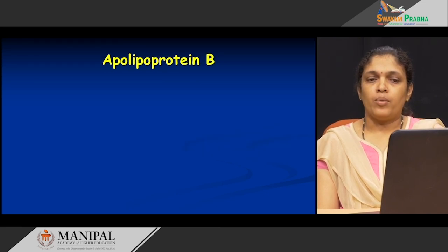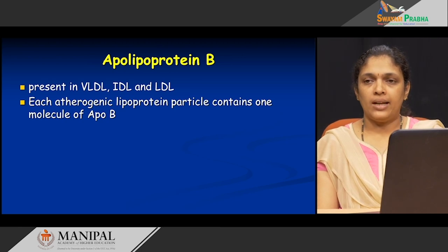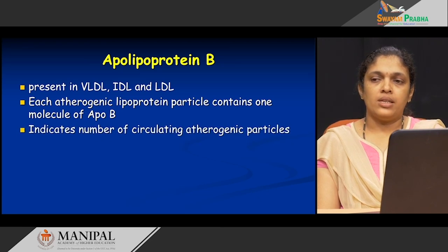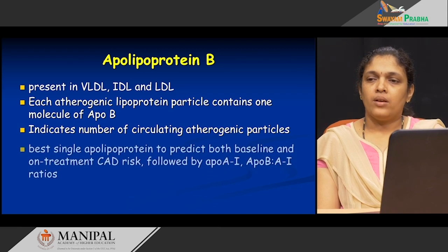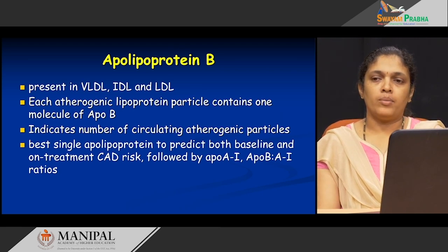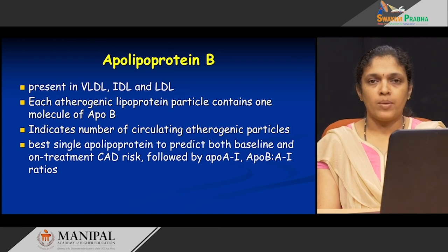Moving on to apolipoprotein B — this is seen in lipoproteins like VLDL, IDL, and LDL. LDL is an atherogenic lipoprotein, which has one molecule of apo B. So if more is the apo B, it indirectly means higher levels of LDL. Having higher levels of LDL is not preferable, as it gives us the number of atherogenic particles in the blood. Apo B helps predict baseline lipid levels and the chance of having coronary artery disease. The order of importance is: first apo B, then apo A1, then the ratio of apo B to A1.